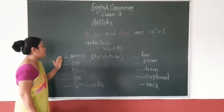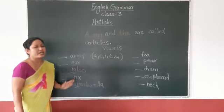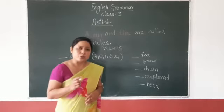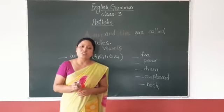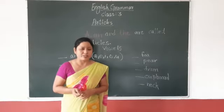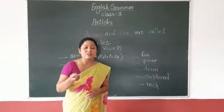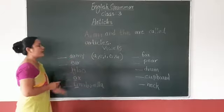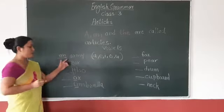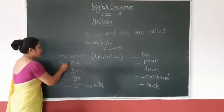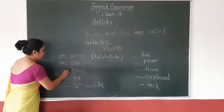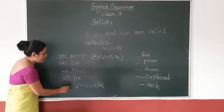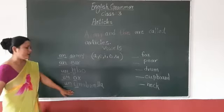So now we are going to use either A or An. We use An for the words which start with vowels. So we will write here: An arm, An ear, An igloo, An ox, and An enough.